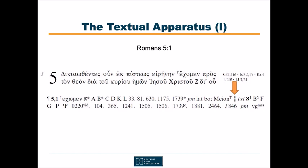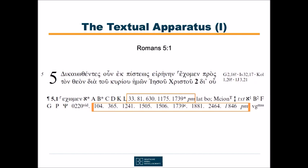Second, the attestation of each reading always follows the same pattern. At the beginning, if extant — which is not the case here — any papyri evidence is shown. Then the uncials follow. The most prominent of them are represented by a single letter, like A or B, and others by a number which begins with a zero, like 022. Then the minuscules and lectionaries follow. They are always rendered by a number without a beginning zero. If it is a lectionary manuscript, then the letter L stands before the number.